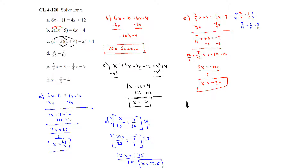For part f, we have x plus x over 3 equals 4. This is 1x plus one-third x, which I'll write as the improper fraction four-thirds x equals 4. Multiplying by the reciprocal three-fourths, we get x equals 4 times three-fourths, which gives x equals 3. So there are all the different versions of solving equations we've done so far.